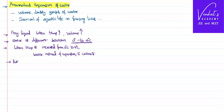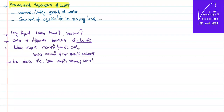But above 4 degrees centigrade, with rise in temperature, like any other liquid, the volume of water also increases. So water has this specific property not every time, but only between 0 to 4 degrees centigrade. That specific property is called anomalous expansion of water.